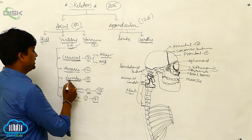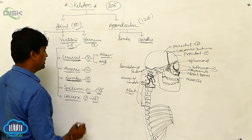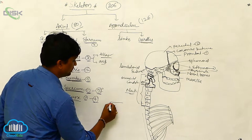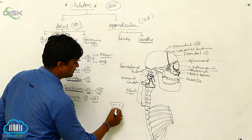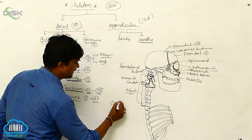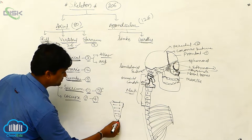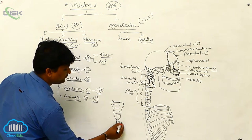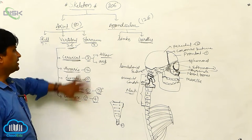Next is the lumbar vertebra, located behind the thoracic region. After lumbar is the sacrum — a triangular-shaped structure formed by five fused bones. The last part is the coccyx, formed by four fused bones. This completes the vertebral column of 26 bones.